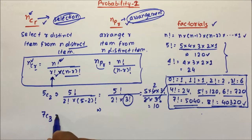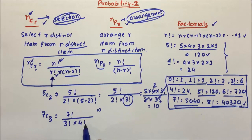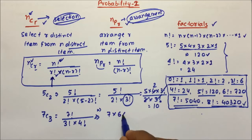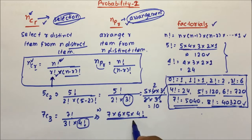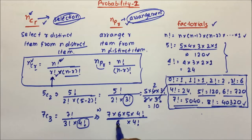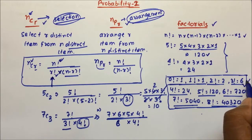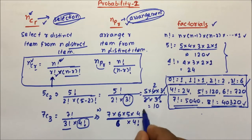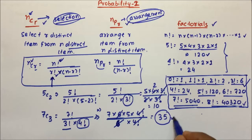Now suppose you have to calculate 7C3. So 7 factorial divided by 3 factorial into 7 minus 3, which is 4 factorial. I expand 7 factorial as 7 into 6 into 5 into 4 factorial, so 4 factorial cancels. And 3 factorial equals 6, so 7 into 6 into 5 divided by 6 — the 6s cancel — giving us 7 into 5, which equals 35. So 7C3 equals 35.